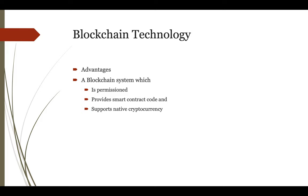Additionally, blockchain provides transparency, concurrence, and immutability. All the process is transparent to everyone, and transactions once confirmed cannot be altered. We are utilizing these properties to make our auction system more secure and robust.